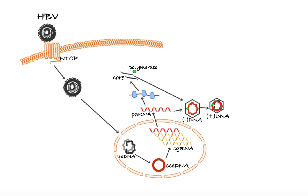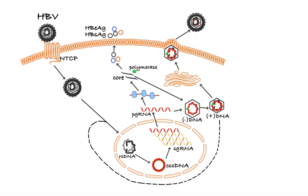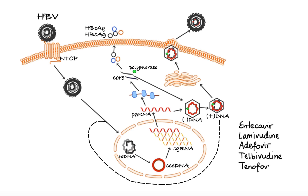Pregenomic RNA is translated into viral proteins, including core and polymerase proteins, which are assembled along with a single strand of pregenomic RNA to form nucleocapsid. Using RNA as a template, the negative DNA strand of the viral genome is generated through reverse transcription. The negative DNA strand then serves as the primer for synthesis of the positive DNA strand. The resulting relaxed circular DNA can either be enveloped in the endoplasmic reticulum and secreted as progeny virions, or recycled back to the nucleus for covalently closed circular DNA amplification. All currently approved antiviral drugs for chronic hepatitis B infection are nucleoside and nucleotide analogs, including entecavir, lamivudine, adefovir, telbivudine, and tenofovir. These drugs inhibit multiple functions of the hepatitis B virus polymerase by competing with natural substrates, resulting in chain termination and inhibition of reverse transcription and viral DNA synthesis.